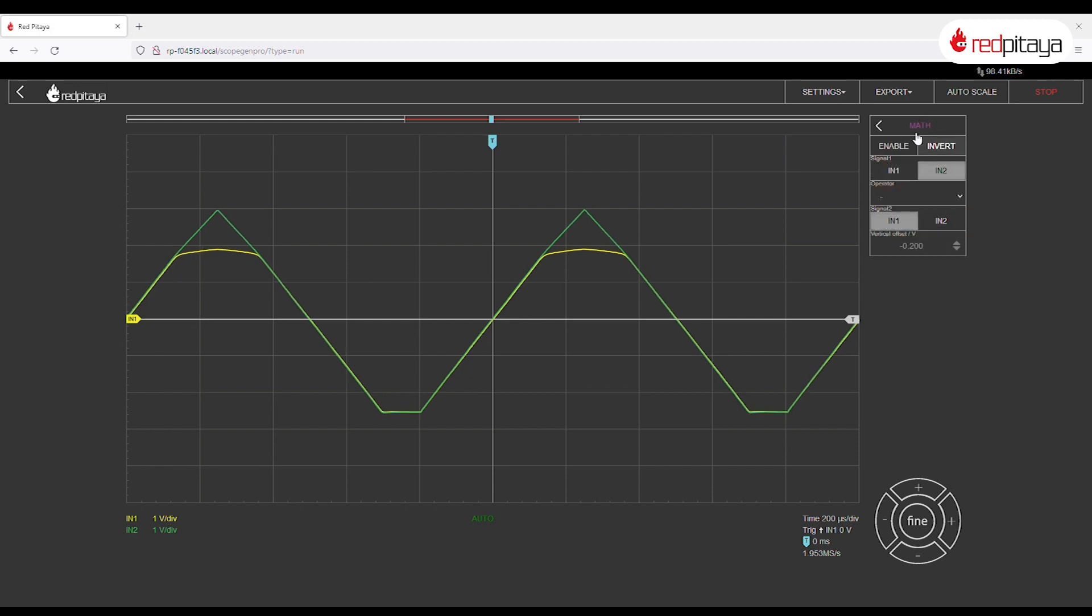To make current measurement easier, let's add a math function to measure the difference between the two inputs that corresponds to the voltage drop across the resistor. And here we go. We can compare different diodes. Different LEDs have different forward voltages and different currents flow through them. This now is a green LED and this is for a white one.